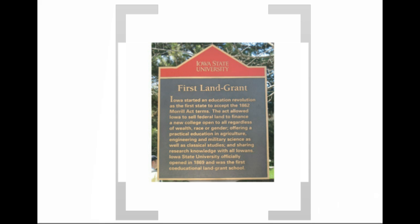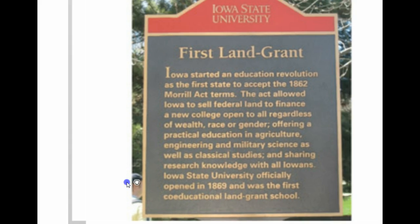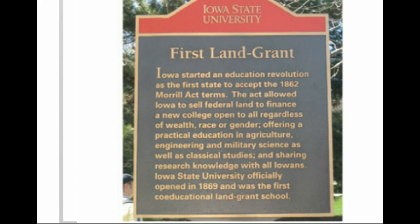Iowa State University, the plaque pictured here, was an attempt to make higher education available to everyone. Reading from the plaque, it says: Iowa started an education revolution as the first state to accept the 1862 Morrill Act terms. The act allowed Iowa to sell federal land to finance a new college open to all, regardless of wealth, race, or gender, offering a practical education in agriculture, engineering, and military science, as well as classical studies, and sharing research knowledge with all Iowans. Iowa State University officially opened in 1869 and was the first coeducational land-grant school.